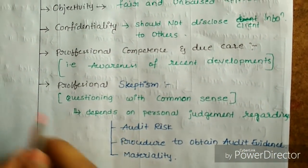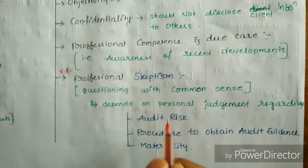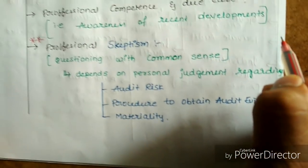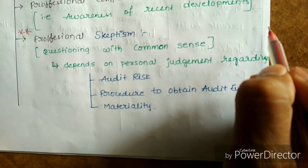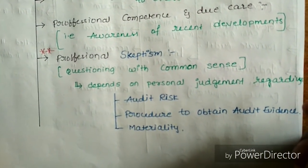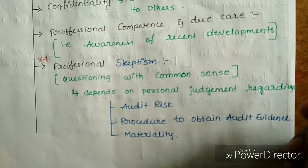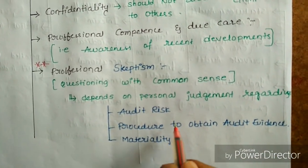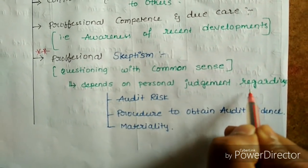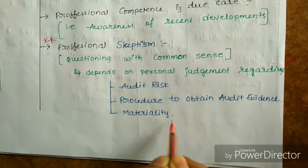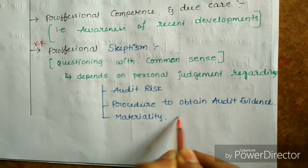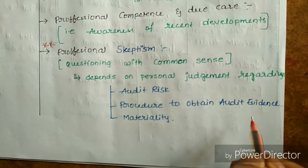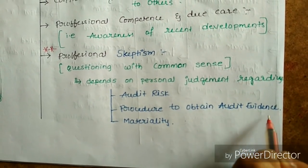Professional skepticism is an important term in auditing. It means questioning with common sense. The auditor should ask questions to management with common sense, having a clear idea about what needs to be done. This depends on personal judgment regarding audit risk, procedure to obtain audit evidence, and materiality — whether material items are disclosed or not. When obtaining audit evidence, the auditor should follow rules and regulations.